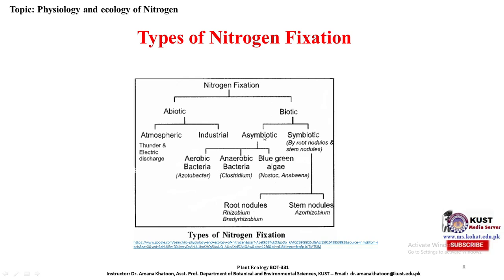In biotic nitrogen fixation, there are two main categories: asymbiotic and symbiotic. In asymbiotic fixation, there are three major types: aerobic bacteria such as Azotobacter, anaerobic bacteria such as Clostridium, and blue-green algae including Nostoc and Anabaena.